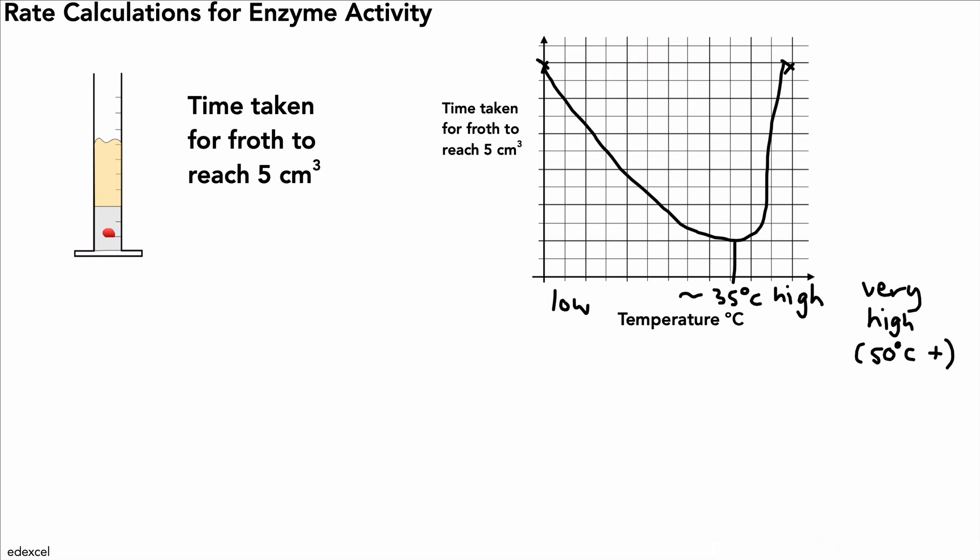So just a few examples of how you might measure the rate of enzyme-controlled reactions and what the graphs may look like. Remember, if you're presented with some of these in the exam, look very carefully at the axes to understand what kind of graph you might get. Thanks for watching, and I'll see you soon.